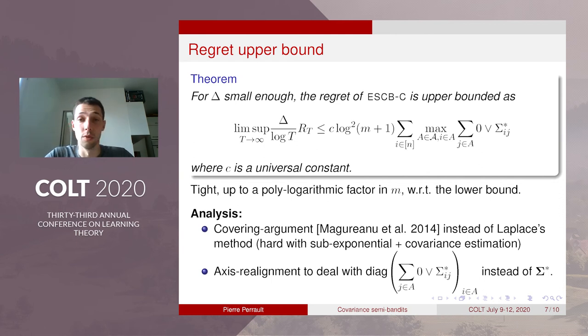And also because the covariance estimation is hard to deal with Laplace method. And the covering argument is much easier to deal with an axis-aligned region. So this is why we use this diagonal matrix instead of sigma star.